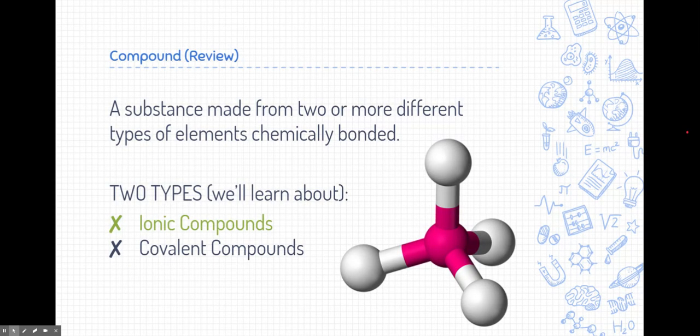In order to talk about this, let's take a little bit of a review about compounds we learned in a previous module. A compound, as you recall, is a substance made from two or more different types of elements that are chemically bonded. Now that's important, they have to be put together to make one new substance that can't be separated.